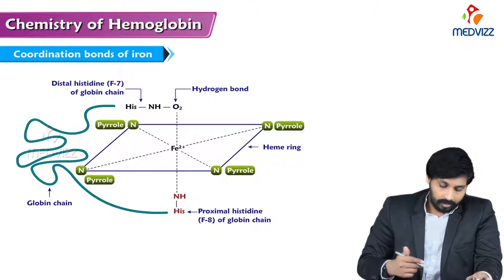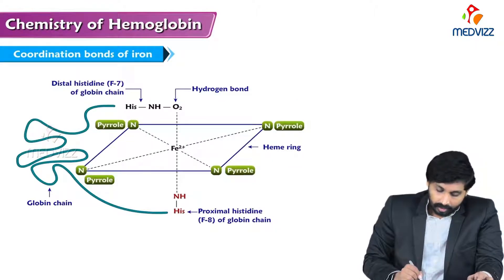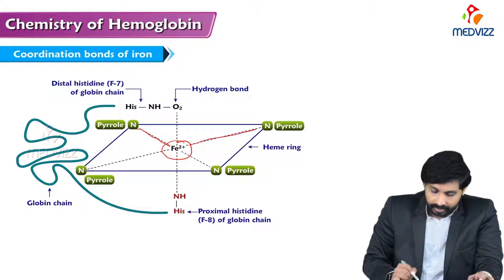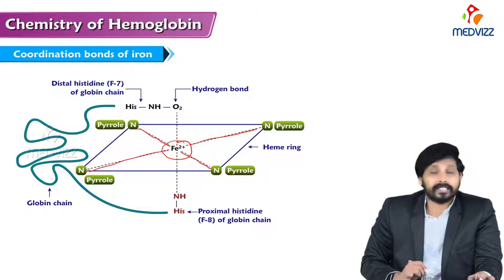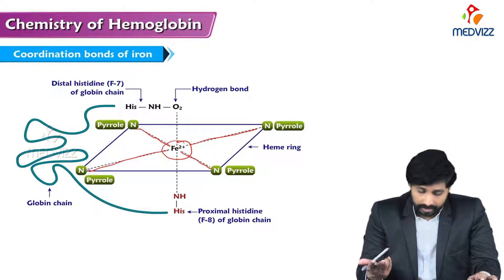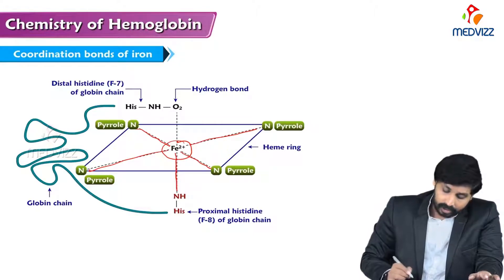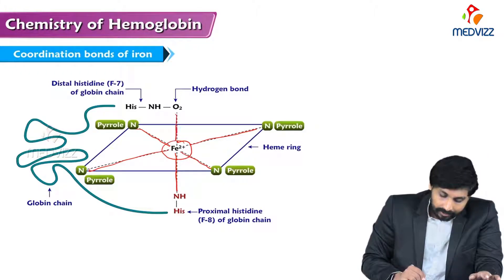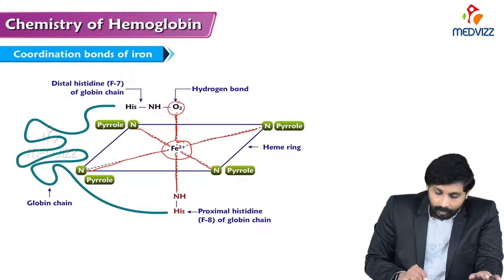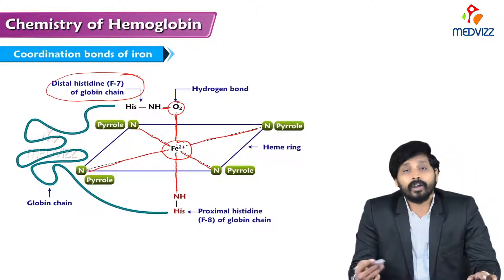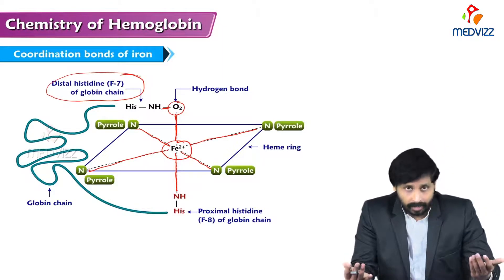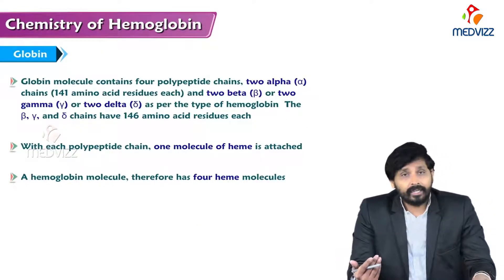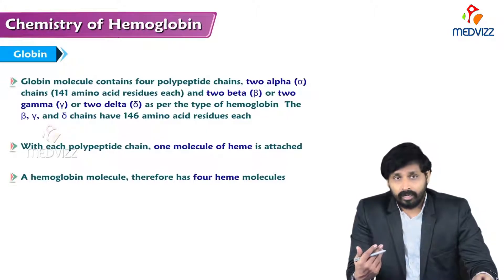In the diagrammatic representation, the iron molecule is at the center with four valencies from nitrogen, one valency from proximal histidine of the globin chain as the fifth bond, and the sixth valency is oxygen. The remaining valency of oxygen is attached to the distal histidine of the globin chain. This is how all the valences of iron in heme are satisfied.